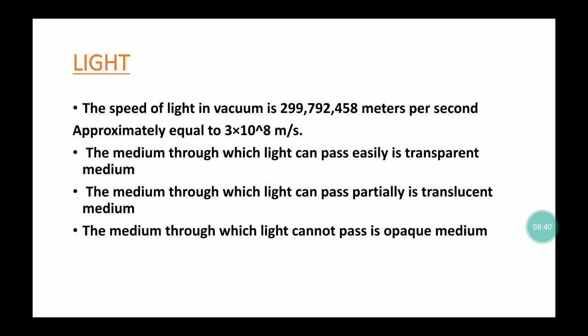Next is Light, the most important topic in Physics. The speed of light in vacuum is scientifically 299,792,458 meters per second, but approximately we write 3 × 10⁸ meters per second. Regarding media: a transparent medium is one through which light can easily pass, a translucent medium is one through which light partially passes, and an opaque medium is one through which light cannot pass at all, like wood.